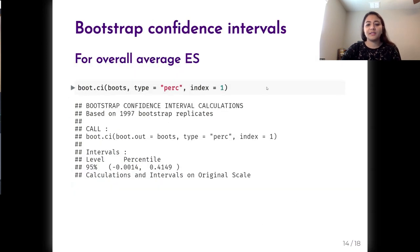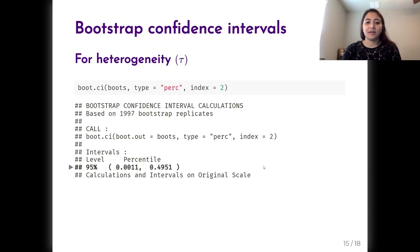To get bootstrap confidence intervals, we can use the boot.ci function, specify the type of confidence intervals, and specify the index of the parameter that we want. Here, the index of one is for the overall average effect size, and we get the confidence intervals for the overall average effect. Based on the selection model, the overall average effect has gone down a bit from 0.20 to 0.13, and the CI indicates that there's quite a bit of uncertainty around it. Here we get the confidence intervals for between-study heterogeneity and for the selection weight.